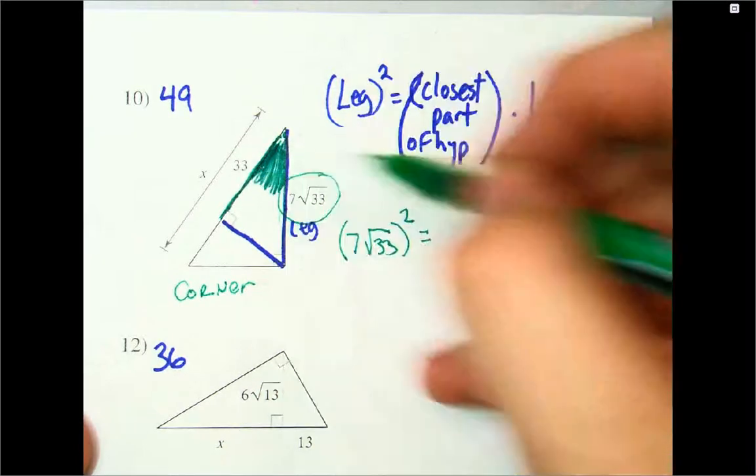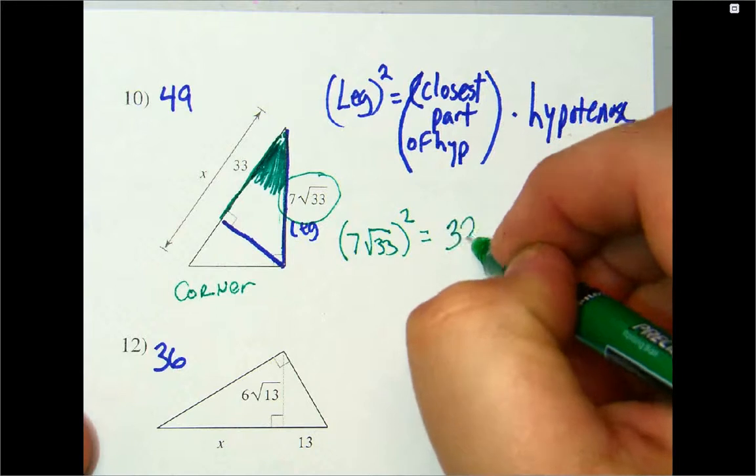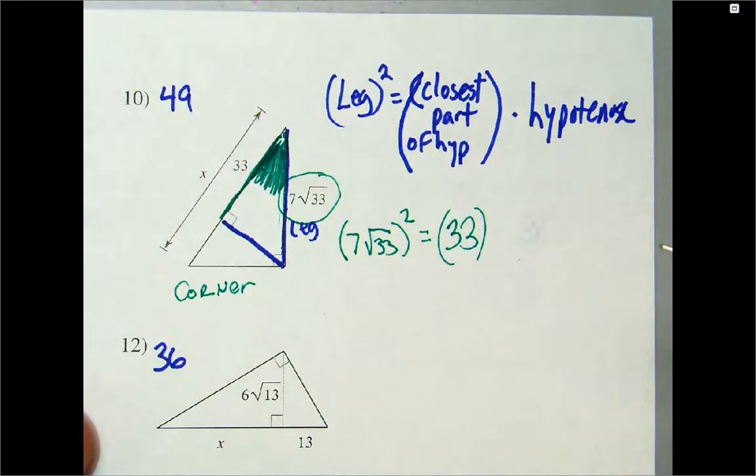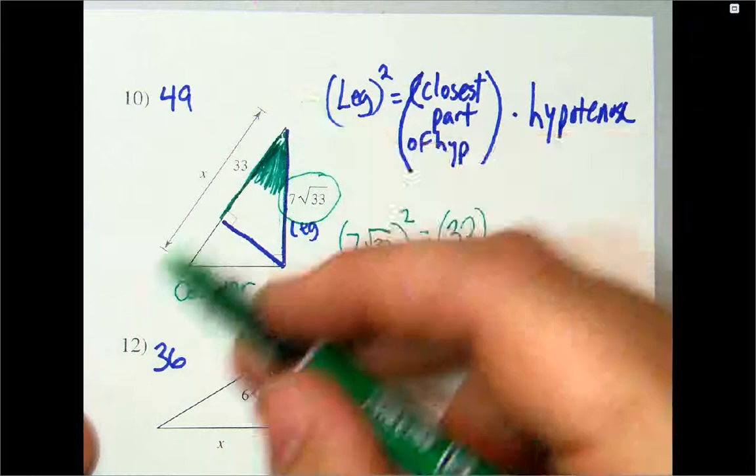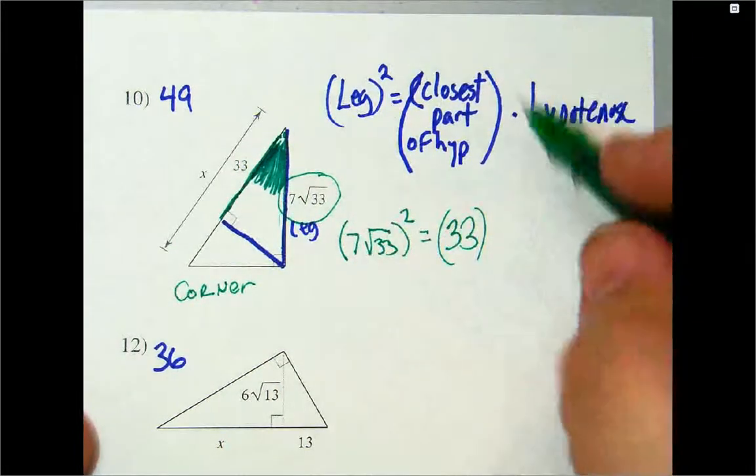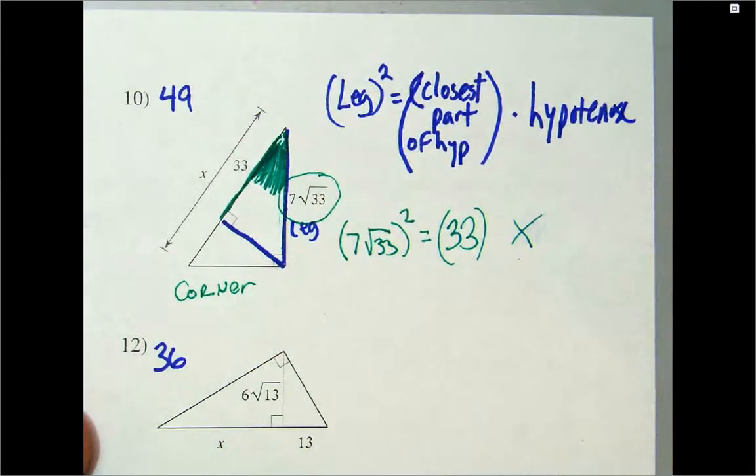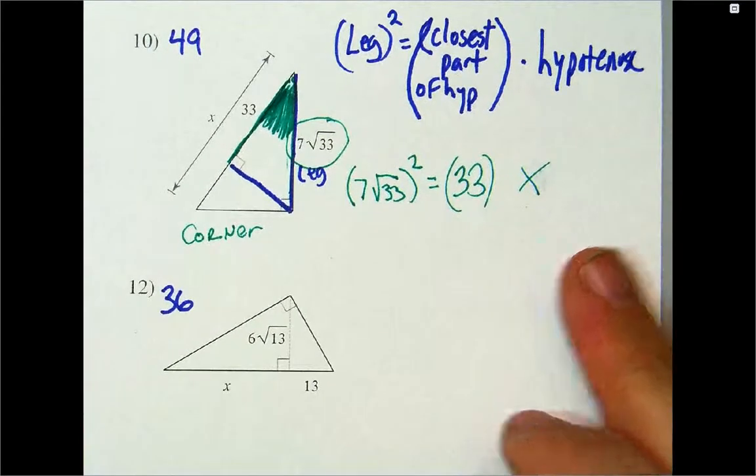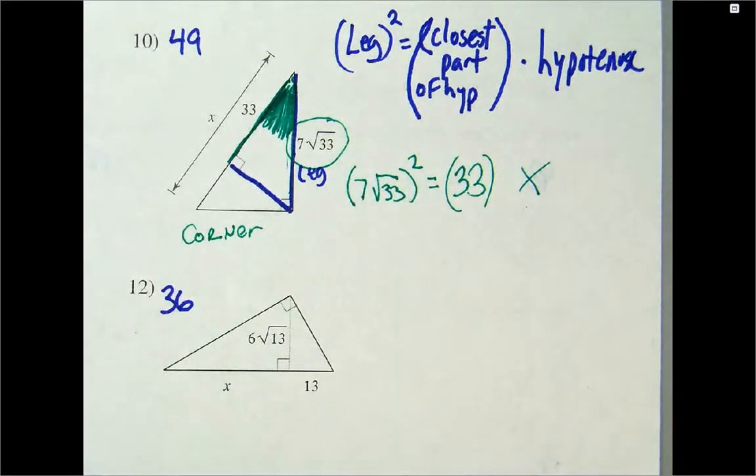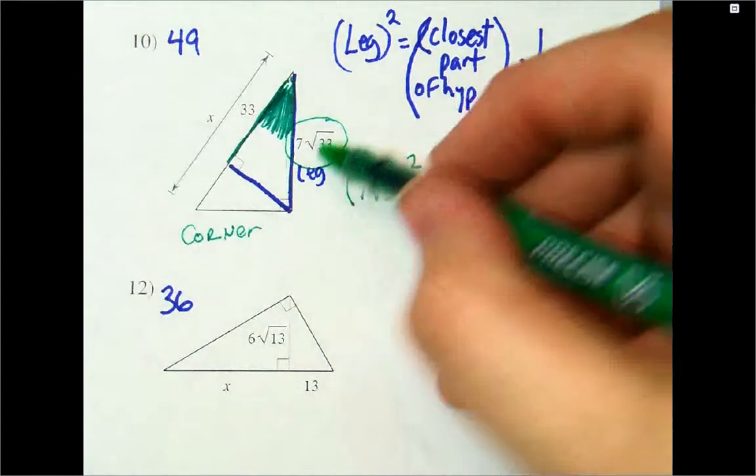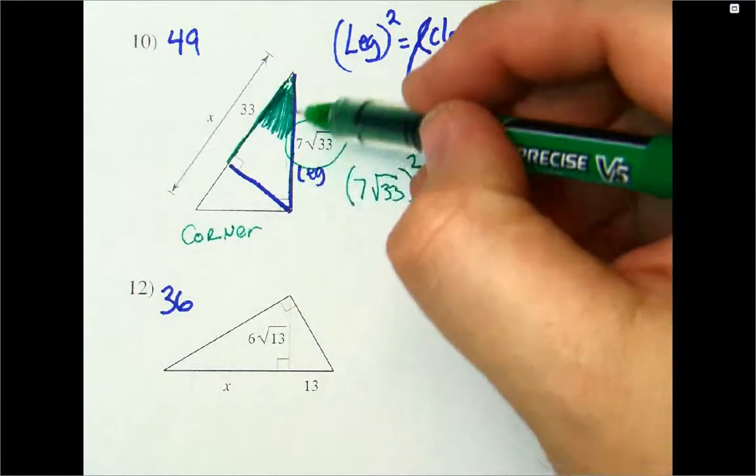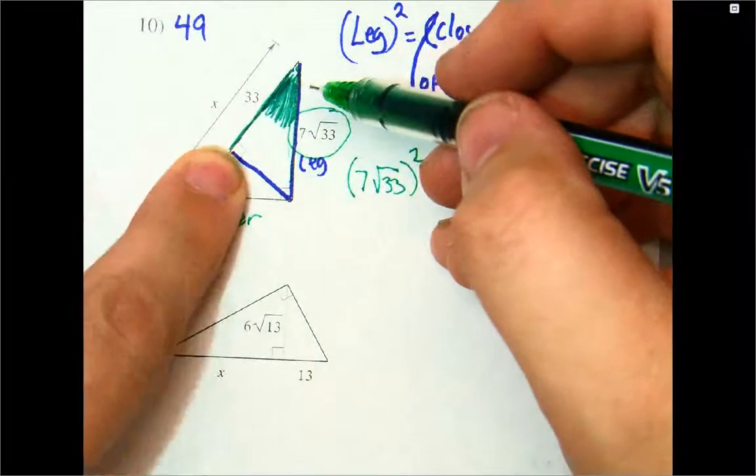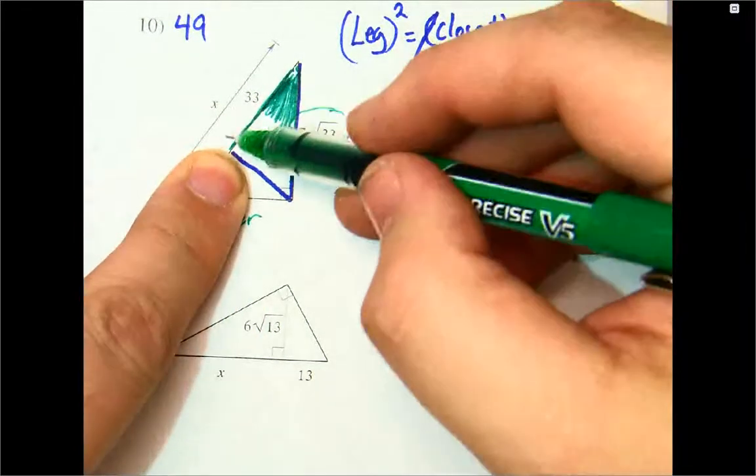So, the part that makes the corner is going to be 33. And then you multiply by the whole shebang, the whole part, which is X. So there's a couple different ways you can really think about it. If you're dealing with a leg, you're really concerned with the corner itself, and what part makes the corner. You can cover up the second part of it. That part makes the corner, the 33.